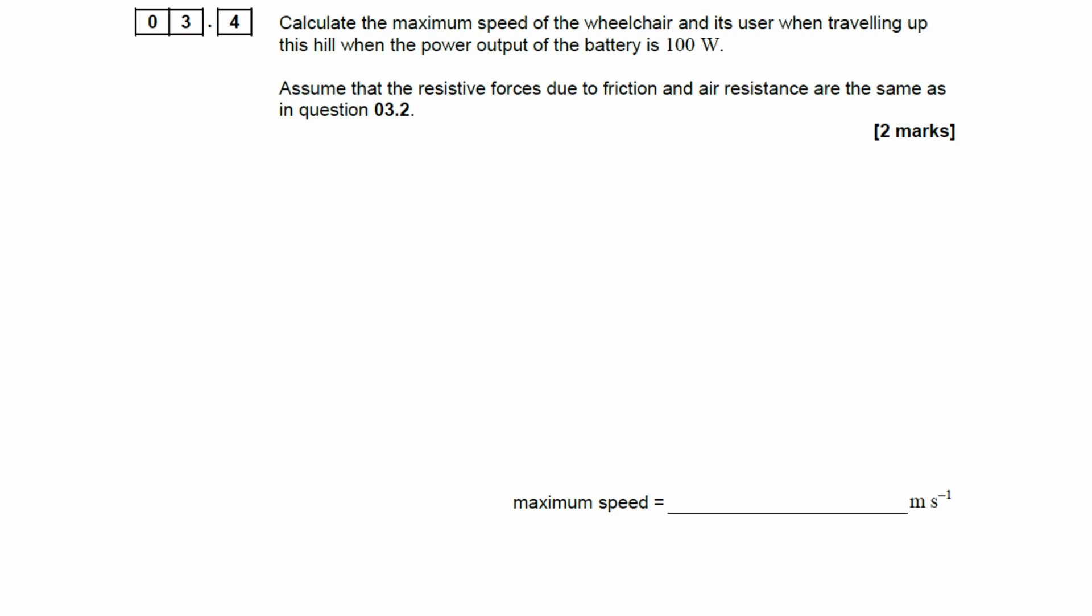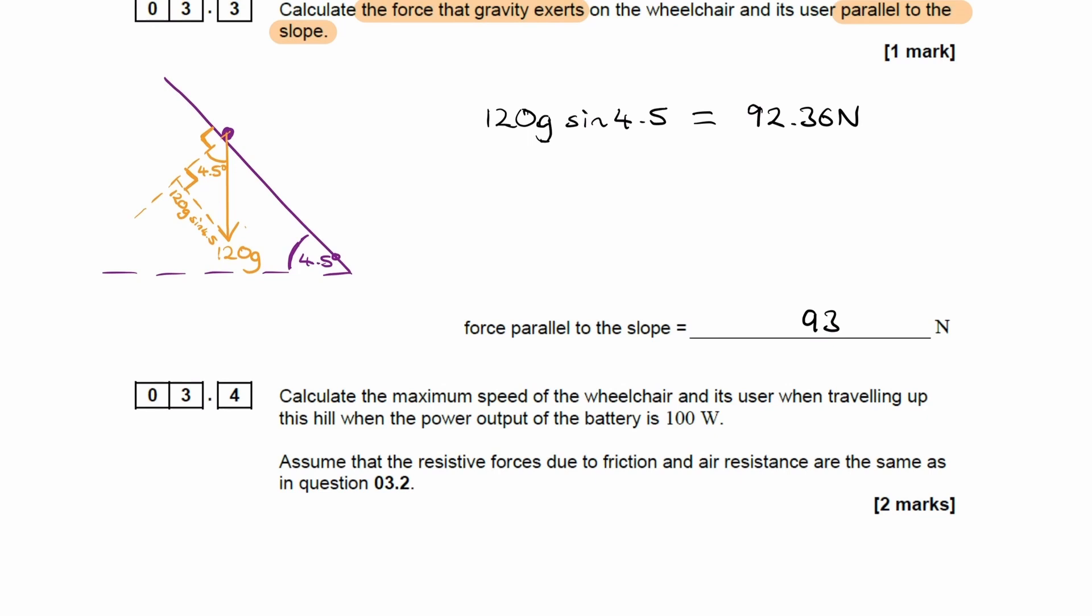For 3.4, calculate the maximum speed of the wheelchair when traveling up this hill when the power output of the battery is 100 watts. Assume the resistive forces are the same as in question 3.2. We can use the same force diagram.